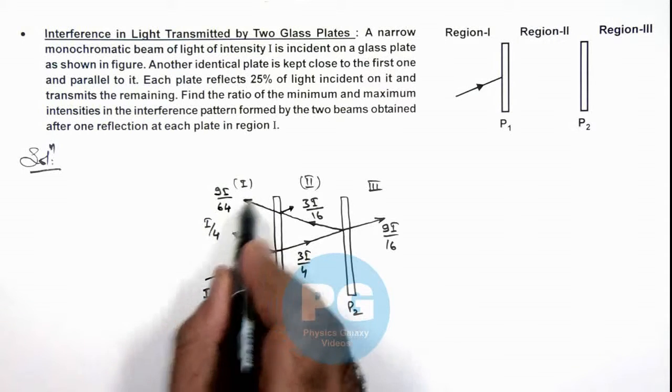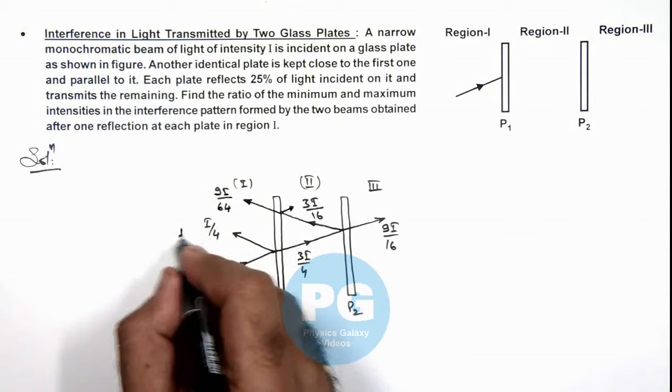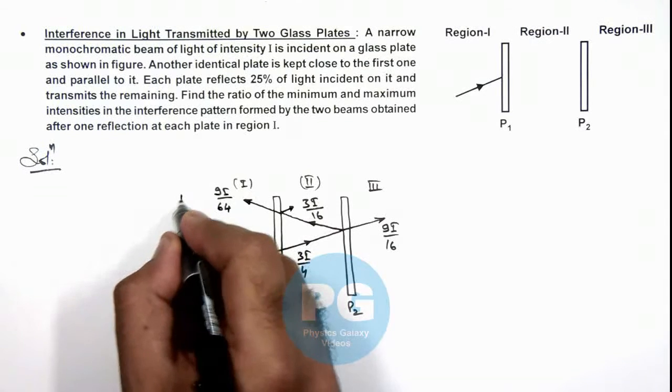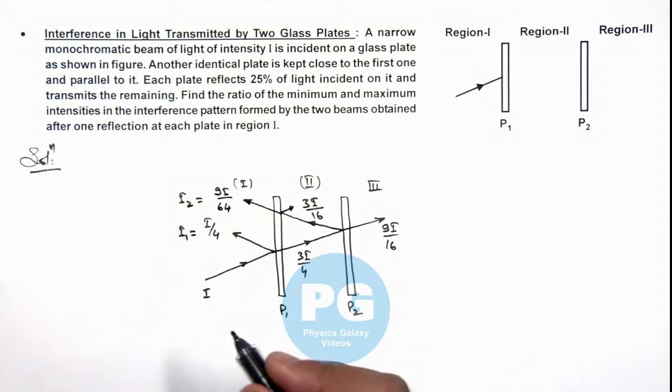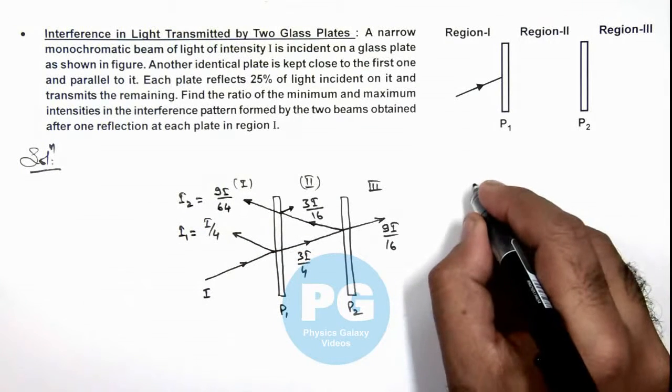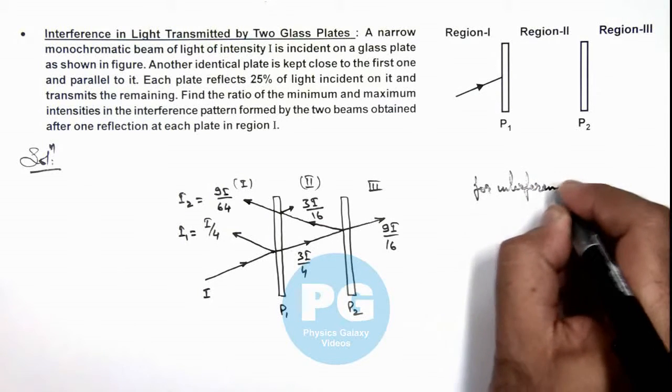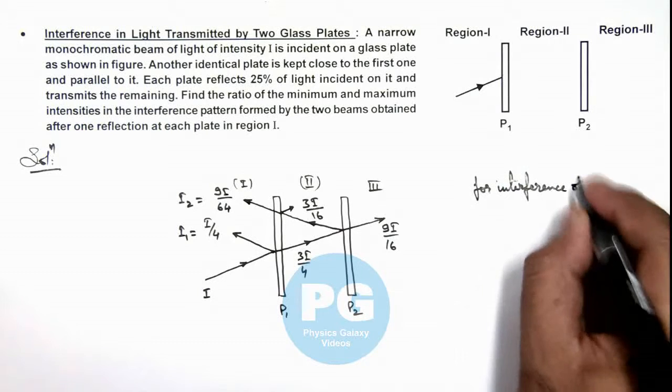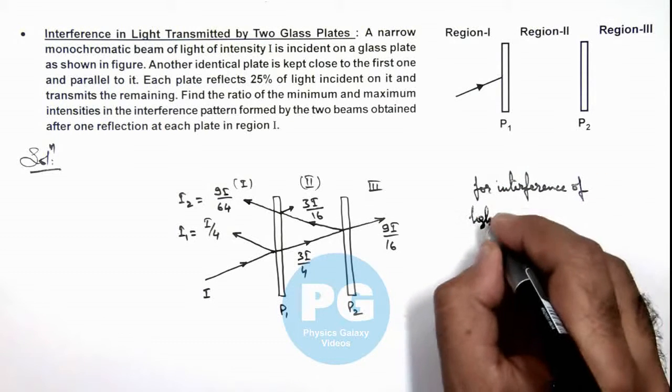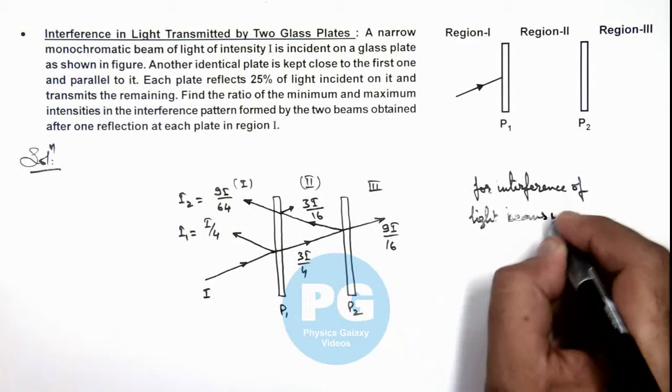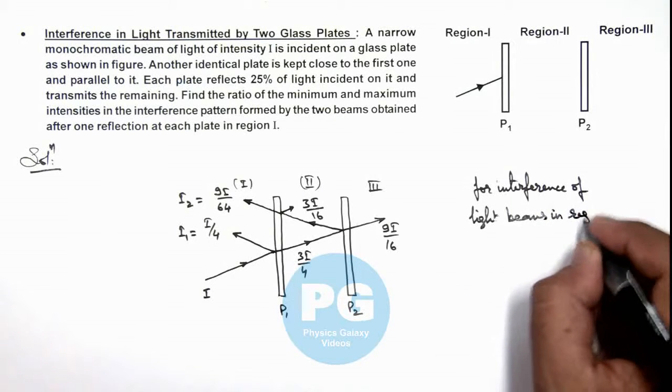So these two beams will interfere in region 1. This we can take as intensity 1 and this as intensity 2. So we can write for interference of light beams in region 1,